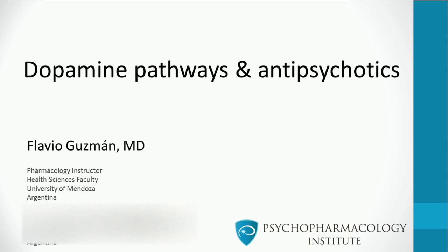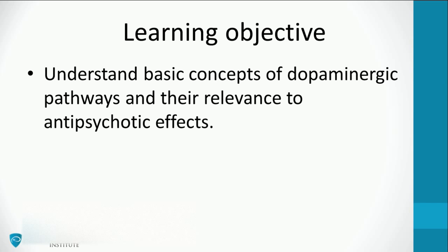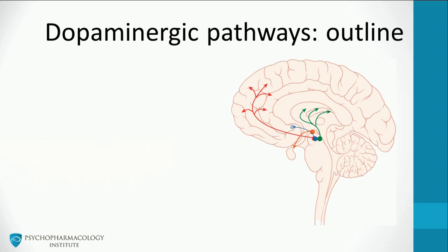In this video, I will introduce dopamine pathways and their physiology relevant to antipsychotic pharmacology. The learning objective of this presentation is to understand basic concepts of dopaminergic pathways and their relevance to antipsychotic effects. Let's start by outlining the dopaminergic pathways. This image shows an integration of the four dopamine pathways I'll be talking about. It's essential that we learn about dopamine projections before studying how antipsychotics modify dopaminergic neurotransmission.